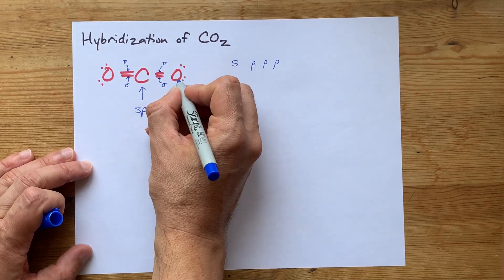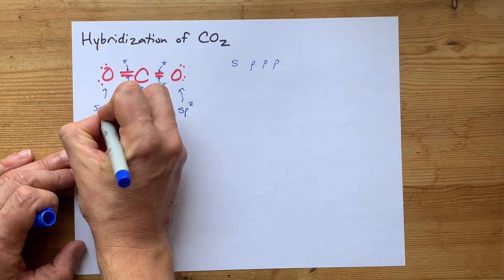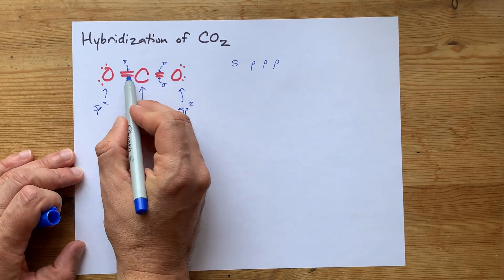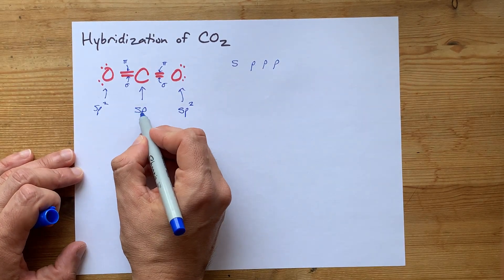It's different because this oxygen only has one pi bond attached to it. So does this one, by the way. It's the exact same. But the carbon has two pi bonds attached to it, and therefore, it's only SP.